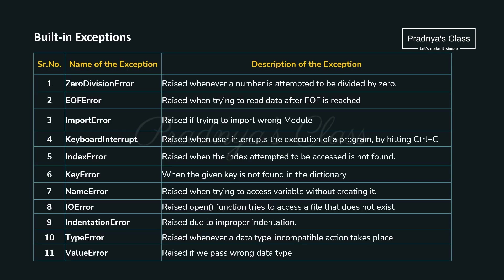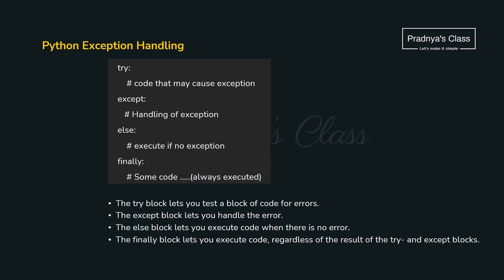Look at the list of built-in exceptions. ZeroDivisionError fires when we try to divide a number by zero. ImportError occurs when you try to import a wrong module. IndexError fires when a specified index doesn't exist. KeyError fires when a key is not present in a dictionary. NameError fires when you try to access a variable without creating it. IndentationError fires for improper indentation. ValueError fires when we pass a wrong data type.